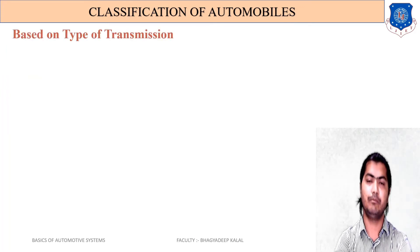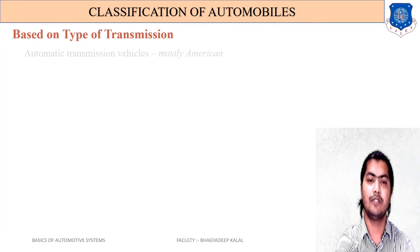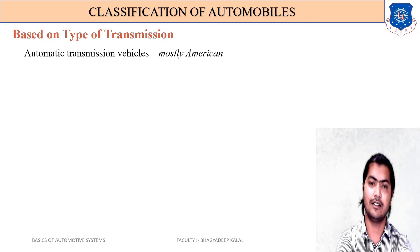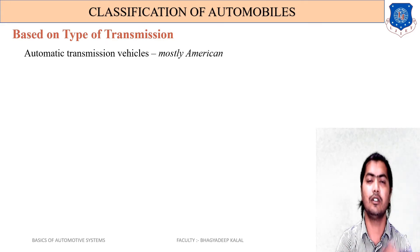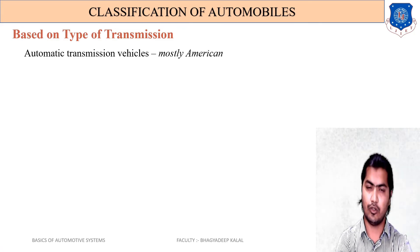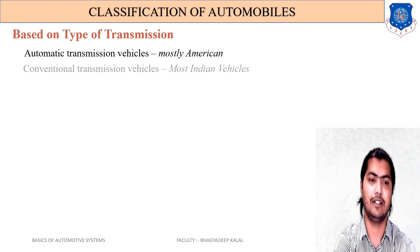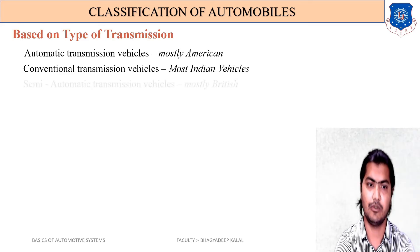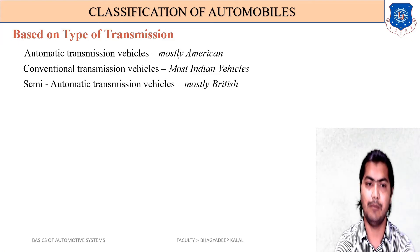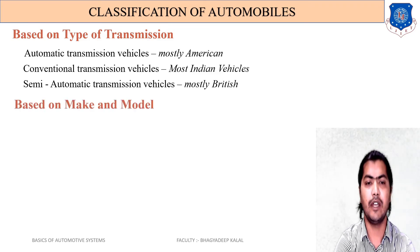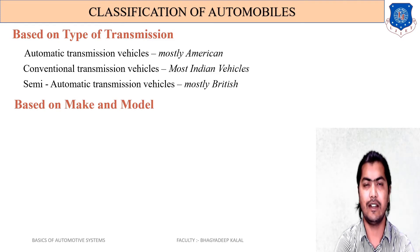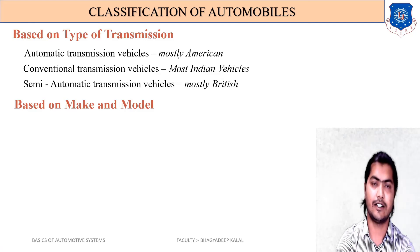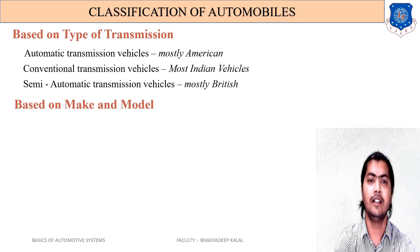Based on type of transmission system: automatic transmission vehicles (common in American vehicles, using torque converters with no manual gear shifting), conventional transmission systems (common in Indian vehicles), and semi-automatic transmission vehicles (common in British vehicles). Based on make and model: various companies design and manufacture vehicles under their own names, such as Tata Motors, Ford, Chevrolet, and Hyundai.